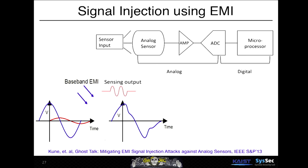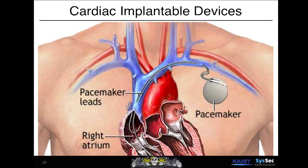If the sensing output is the red line and the external injected signal is the blue line, when these two signals combine, the resulting waveform may be used as a spoofing output depending on how the ADC and microprocessor handle it. We applied this idea against cardiac implantable devices like pacemakers and defibrillators.